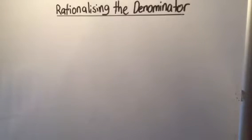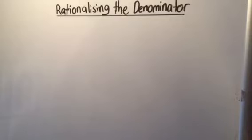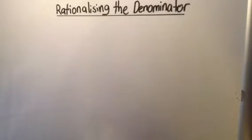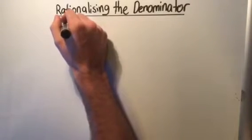Today we're going to look at how to rationalize the denominator when we have an irrational number or a square root on the bottom. A square root and a third are the same thing here. So if we have square root 2 or square root 3 on our denominator, we need to get rid of that. We only want the square roots to be on the numerator or the top of the fraction.